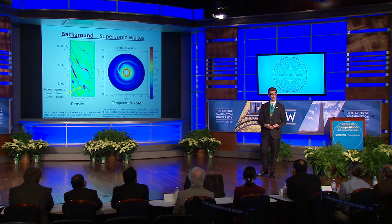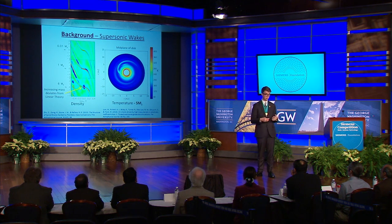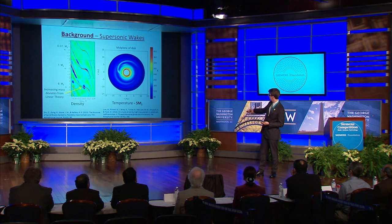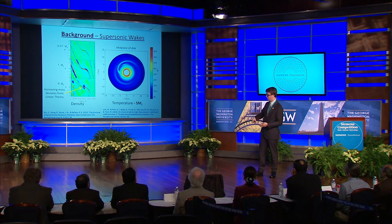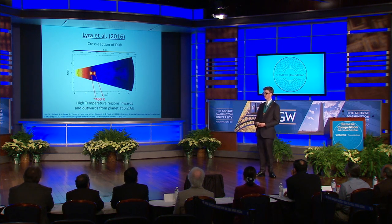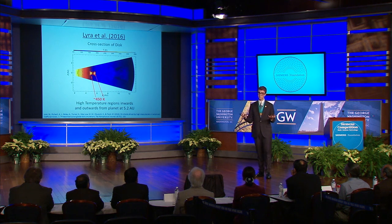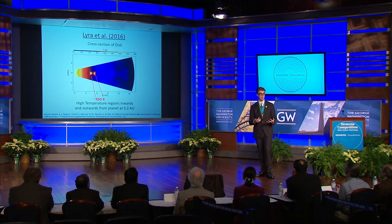On the right, in a simulation by Lyra et al. 2016, they put a five-Jupiter-mass forming planet in a disc, and after 40 orbits this is what the mid-plane temperature profile looked like. Around the location of the planet is a region of high temperature, and just above it in its spiral arm is another region of increased temperature, about 200 Kelvin. If we look at a cross section of this disc, we see that around the location of the planet at 5.2 AU, inwards and outwards radially, there is a high-temperature region of about 450 Kelvin — the same number required to launch the spiral in HD 100546.